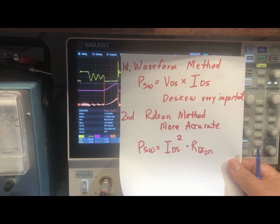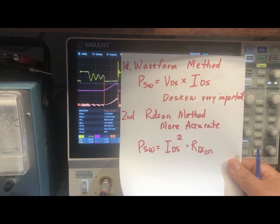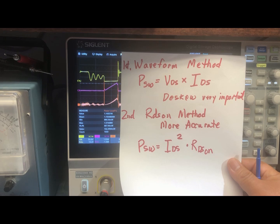To take this measurement it's very important that both probes — in this case probe one and probe two — are deskewed. In other words, they need to be matched as far as time delay is concerned, because if there's any delay or advancement, that's going to mess up your measurements.